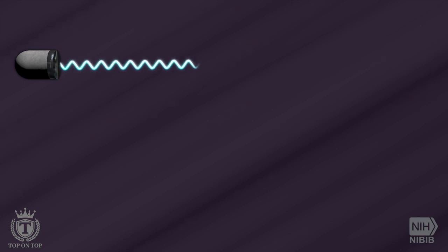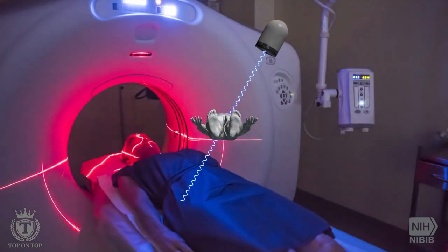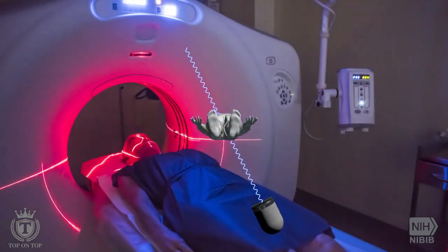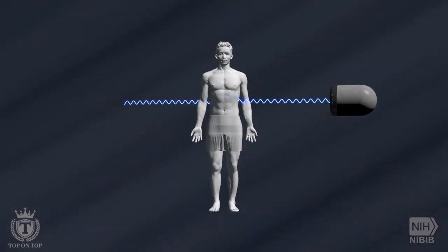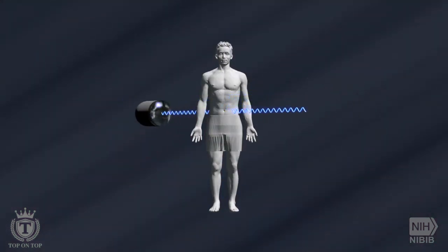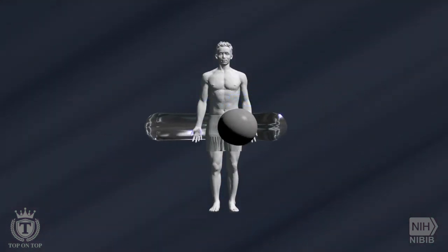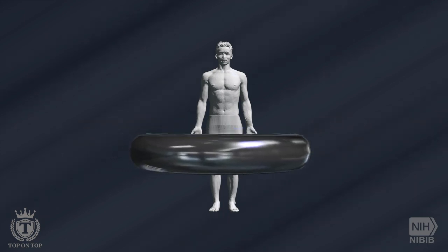A conventional x-ray uses a fixed tube that sends x-rays in only one direction, while a CT scanner uses a motorized x-ray source that shoots narrow beams of x-rays as it rotates around the patient. There are special digital x-ray detectors located directly opposite the x-ray source.